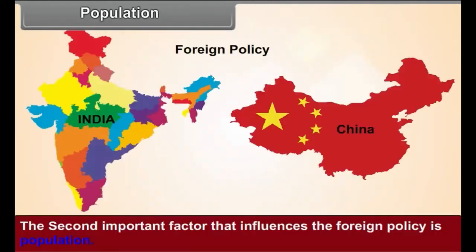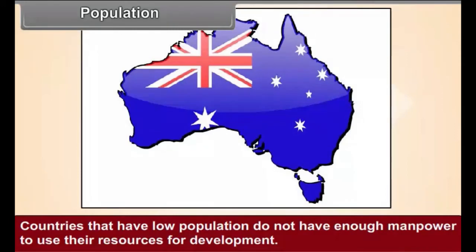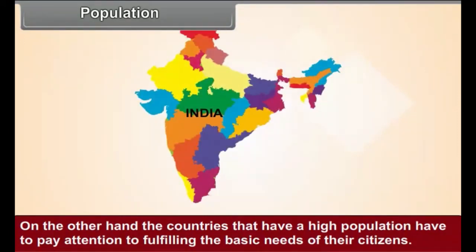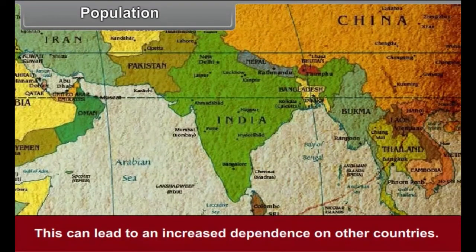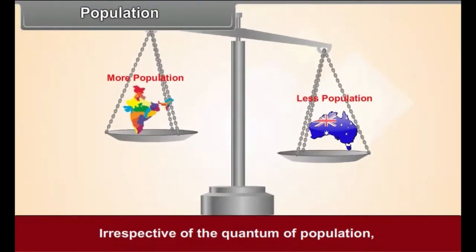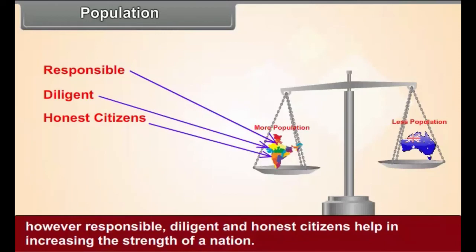Population: The second important factor that influences the foreign policy is population. Countries that have a low population do not have enough manpower to use their resources for development. On the other hand, the countries that have a high population have to pay attention to fulfilling the basic needs of their citizens. This can lead to an increased dependence on other countries, which in turn can create problems in framing an independent foreign policy. Irrespective of the quantum of population, however, responsible, diligent, and honest citizens help in increasing the strength of a nation.